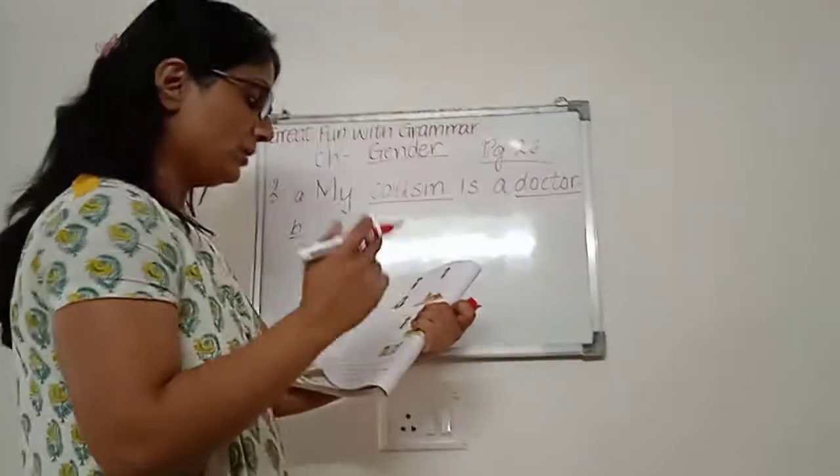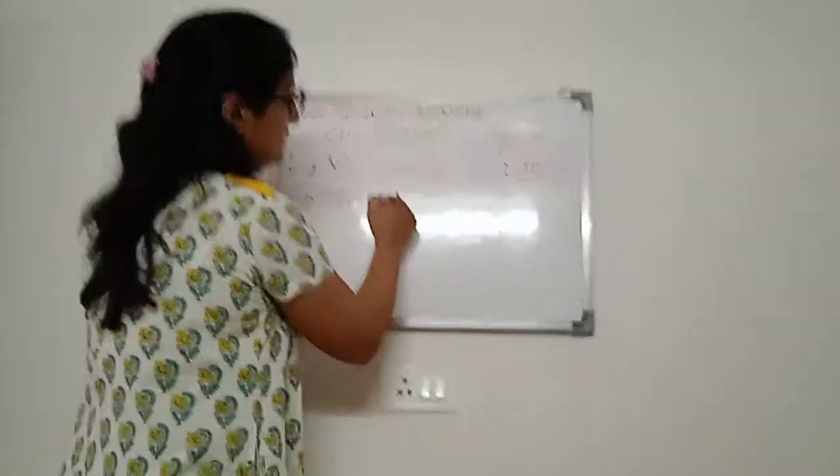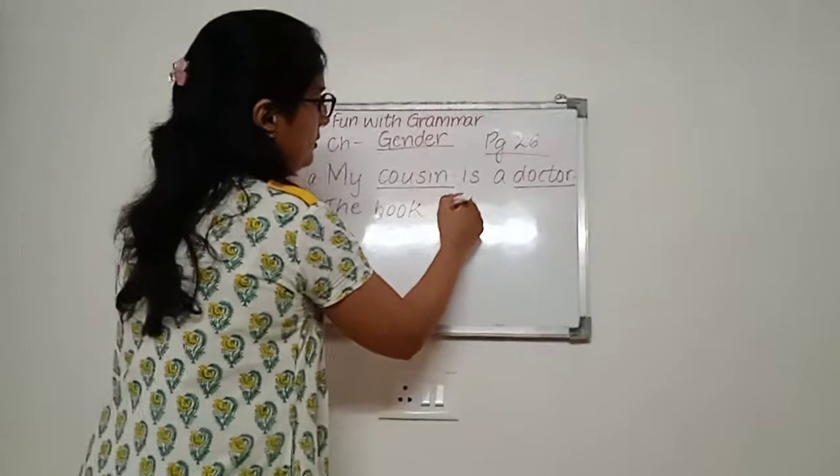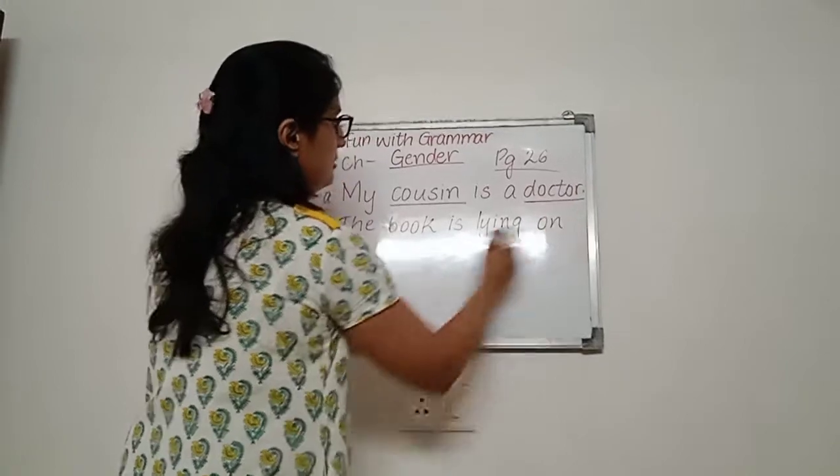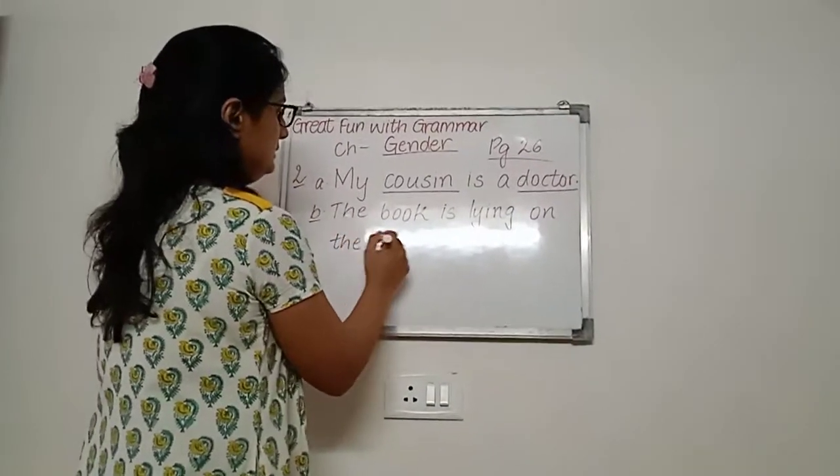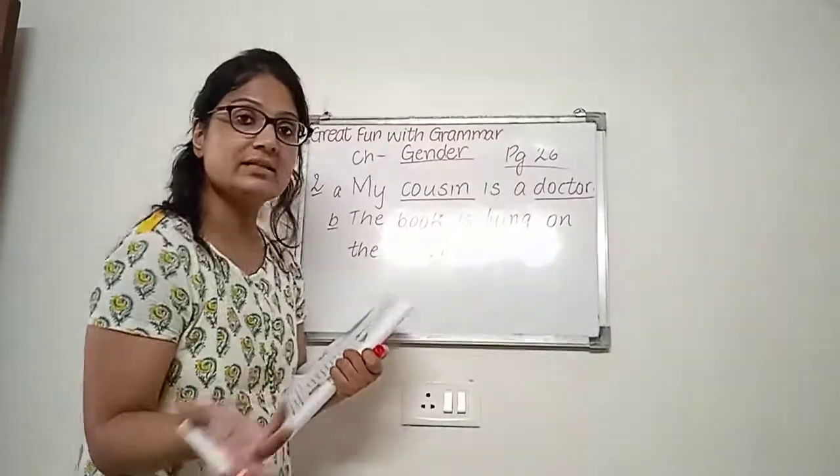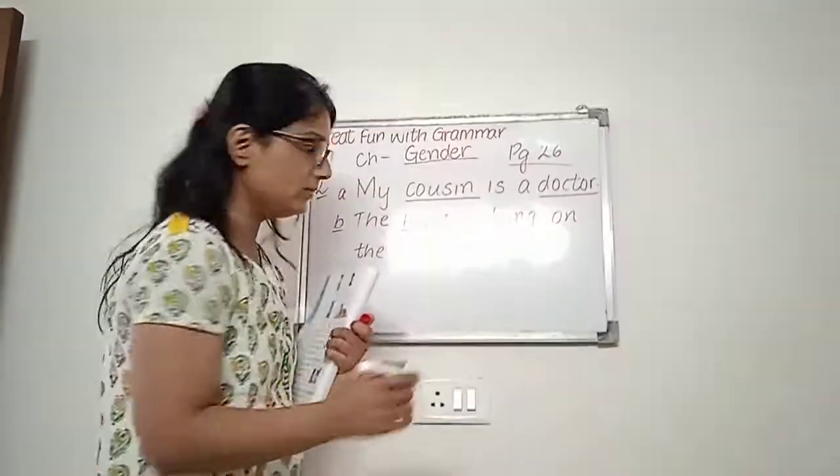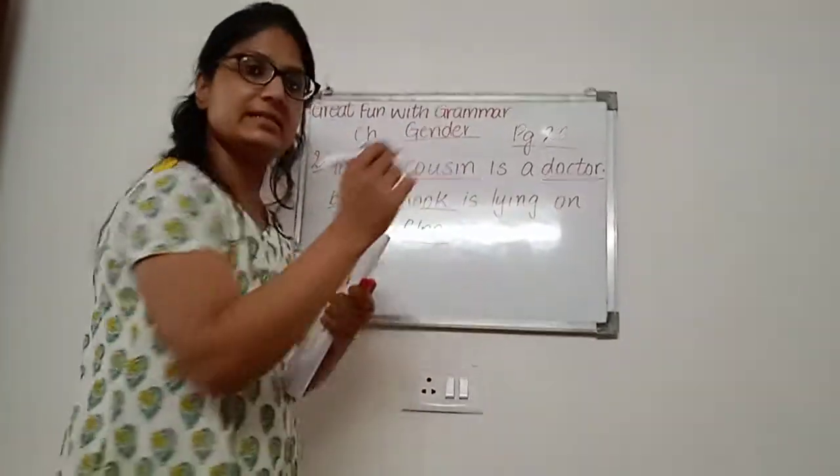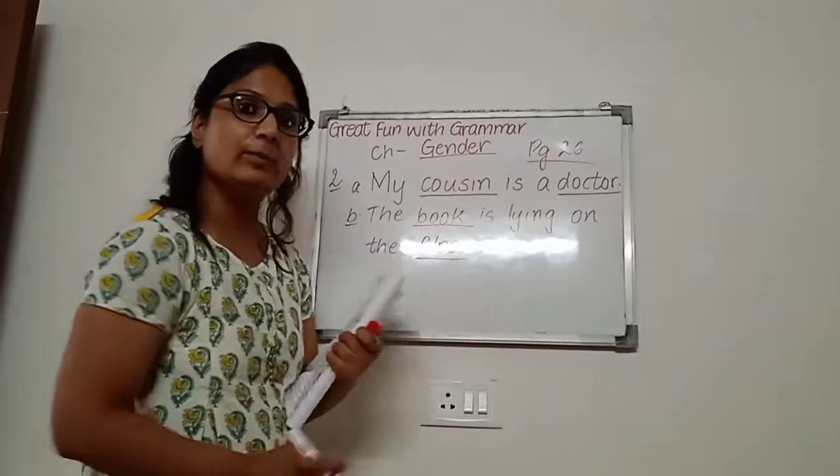Now, the B part is, the book is lying on the floor. Let me write it down. The book is lying on the floor. What are the nouns in this sentence? Book is a noun. Floor is a noun. So, you are going to underline both of them.